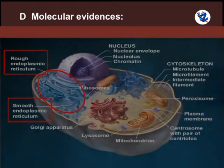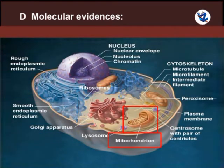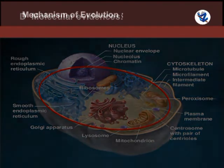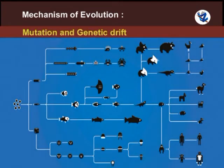Molecular evidence: All organisms show the presence of endoplasmic reticulum, Golgi bodies and mitochondria as cell organelles. ATP is the energy currency in all living organisms. Different theories of evolution were put forward, and mutation and genetic drift — the change in gene frequency in populations — are important factors in the mechanism of evolution.